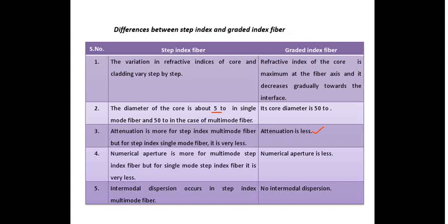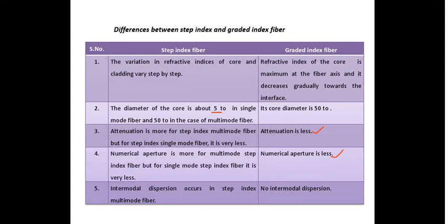In the case of step index single mode fiber, attenuation loss is very low. Numerical aperture is less in the case of graded index fiber. Intermodal dispersion occurs in step index multi-mode fiber, whereas in graded index fiber there is no significant intermodal dispersion. That covers the classification of optical fiber based on the three different categories.